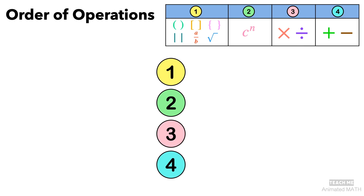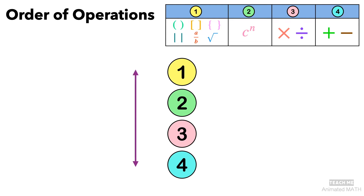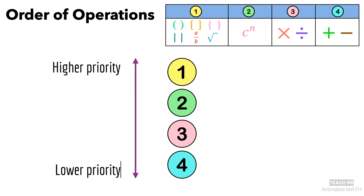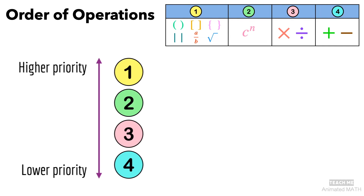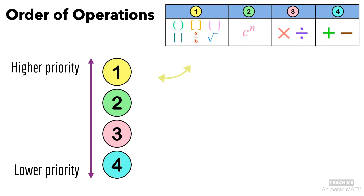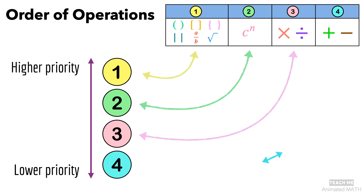Think of these steps as the operations having priority levels or ranks. You will end up having the same answer as long as you perform operations with these ranks or levels in mind. The highest level is simplifying grouping symbols, then follows evaluating exponents. Multiplication and division are on the same priority level. And finally, addition and subtraction are on the bottom level. You can perform same-level operations following the properties of real numbers.